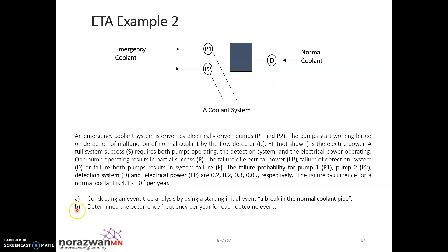The second task is to determine the occurring frequency per year for each outcome event. There are three different outcomes: success, partial success, or failure F. These are the outcome events for this initiating event.